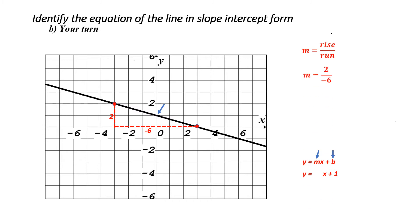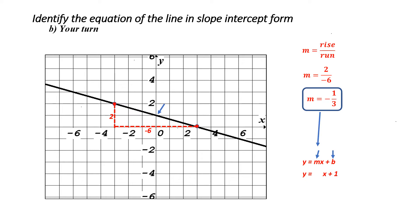I put this into my equation and get a slope of two over negative six. Remember, we always simplify to get a slope of negative one over three. Also remember that we generally shouldn't have a negative in the denominator. I'm now going to take my slope and put it into my equation, replacing m, giving me y equals negative one over three x plus one as my final answer.